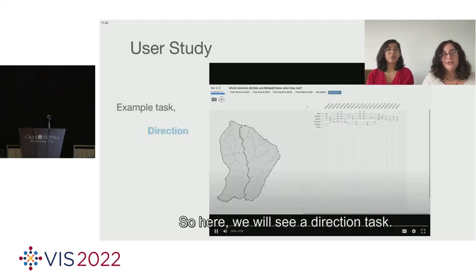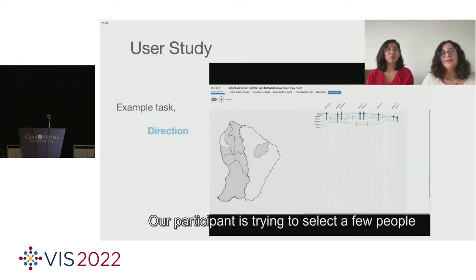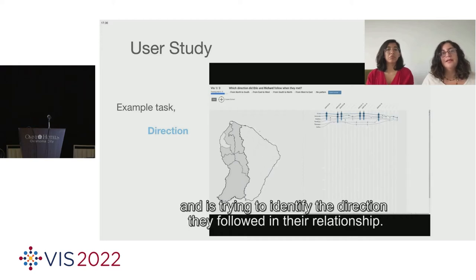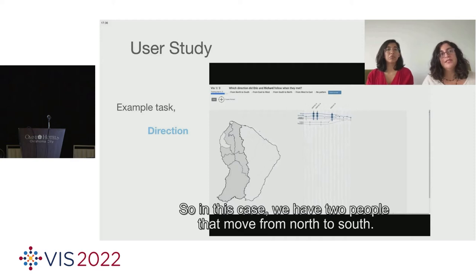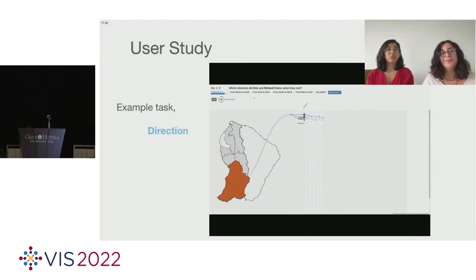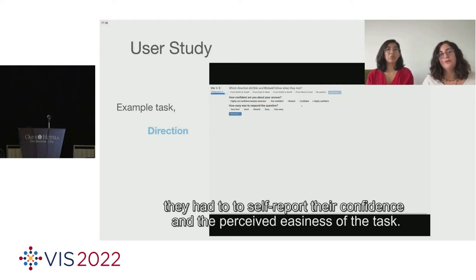But let's look at one task in detail. So here we will see a direction task. Our participant is trying to select a few people and is trying to identify the direction they followed in their relationship. So in this case, we have two people that moved from north to south. Afterwards, after answering their question, they had to self-report their confidence and the perceived easiness of the task.